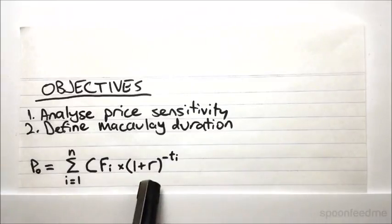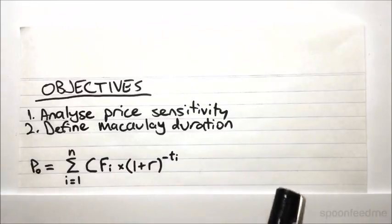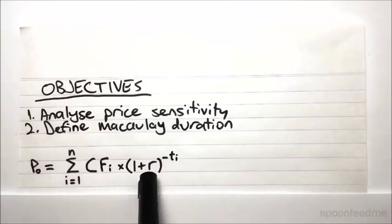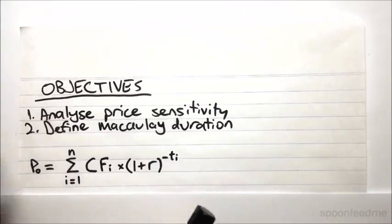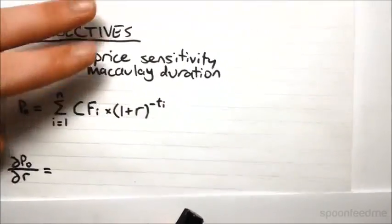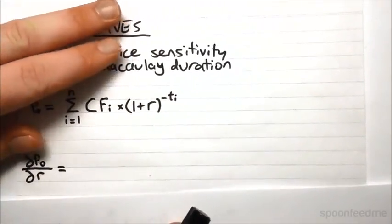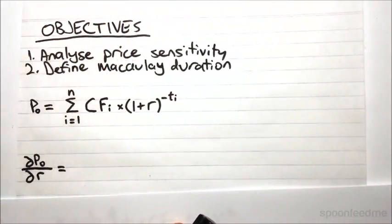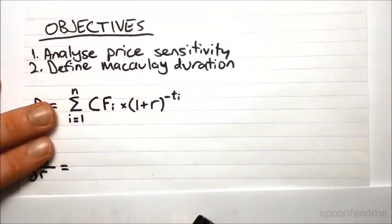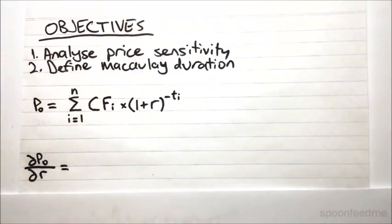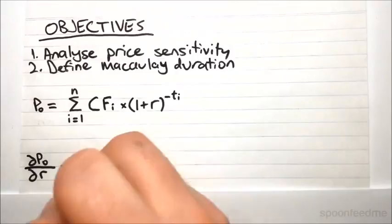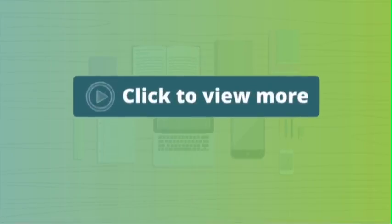Now, so we've got this simple formula for the present value, and thus the price of any security. How sensitive is this to changes in the yield r? Well, a simple measure we can use for this is the derivative. So we take the derivative of the price with respect to the yield. And what is this equal to? Well, it's actually equal to...